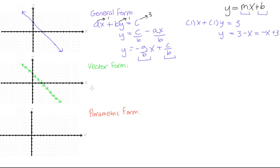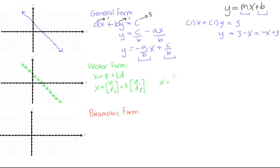Adding one times (1, -1) gives this point, two times (1, -1) gives this point, three times gives this one, and negative multiples go the other direction. Because we're adding every possible multiple of this direction vector, we get the line extending in both directions. The vector form formula is: x equals the coordinates of our point plus some scalar t times the direction vector.